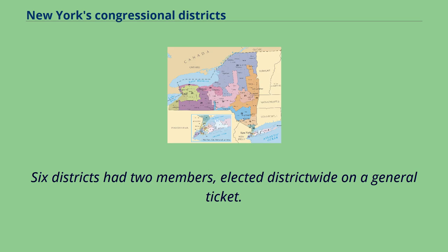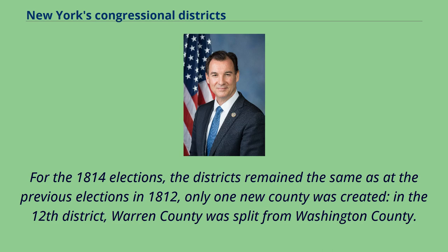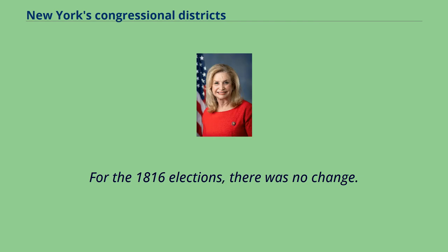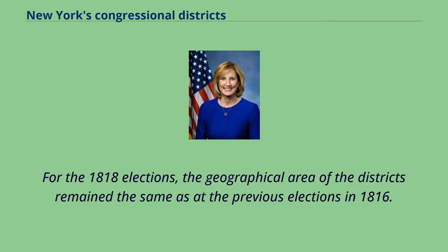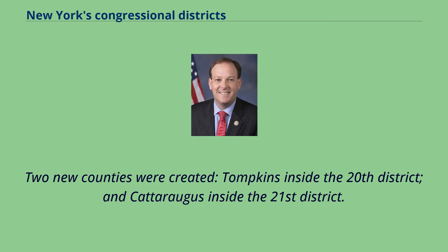Six districts had two members, elected district-wide on a general ticket. For the 1814 elections, the districts remained the same as at the previous elections in 1812; only one new county was created — in the 12th district, Warren County was split from Washington County. For the 1816 elections, there was no change. For the 1818 elections, the geographical area of the districts remained the same as at the previous elections in 1816. Two new counties were created: Tompkins inside the 20th district, and Cattaraugus inside the 21st district.